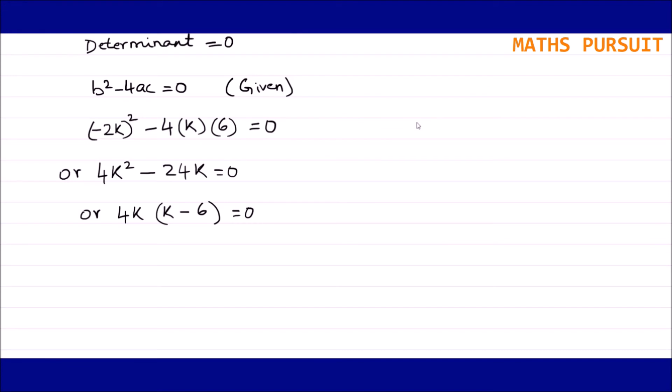Or I can write k - 6 = 0/4k, just bringing 4k to the right side of the equation. Or I can write k - 6 = 0 because 0 upon anything is 0. Or I can write k = 6.